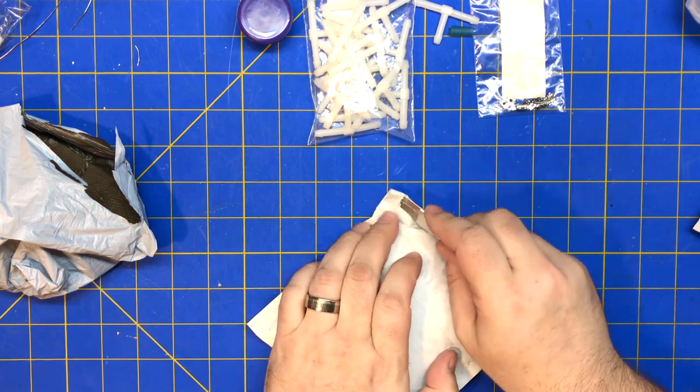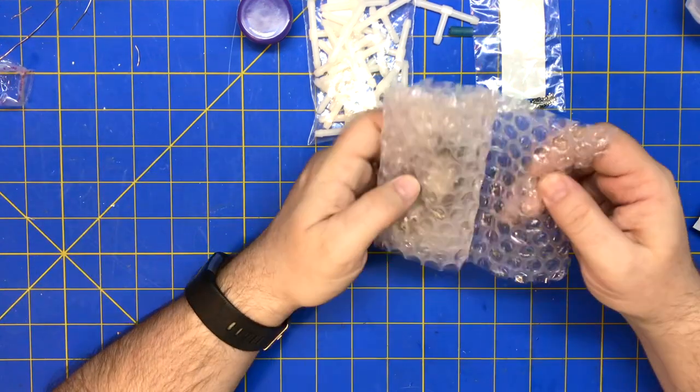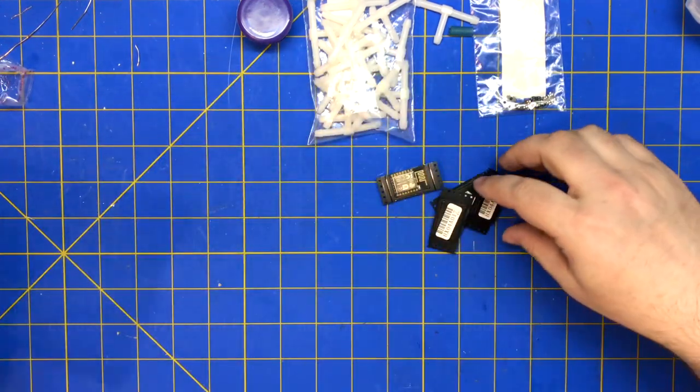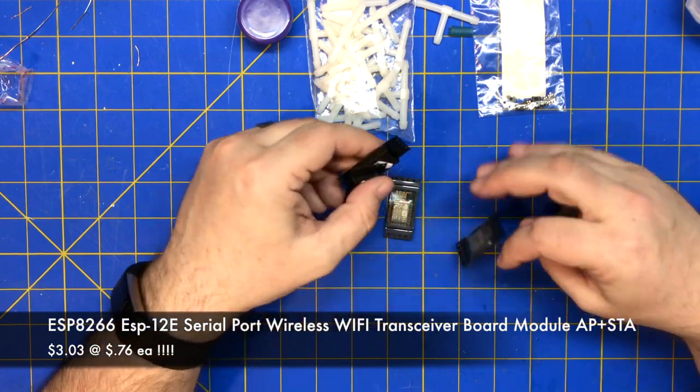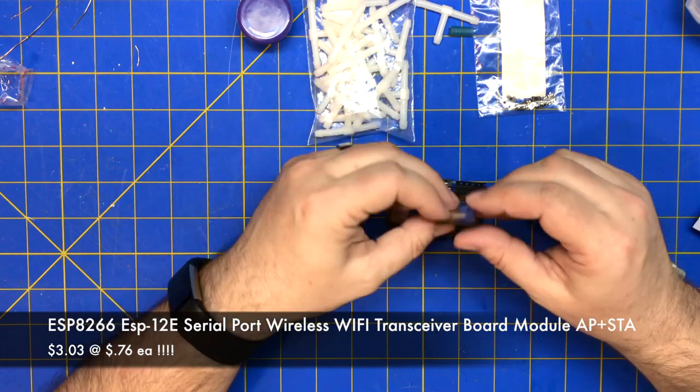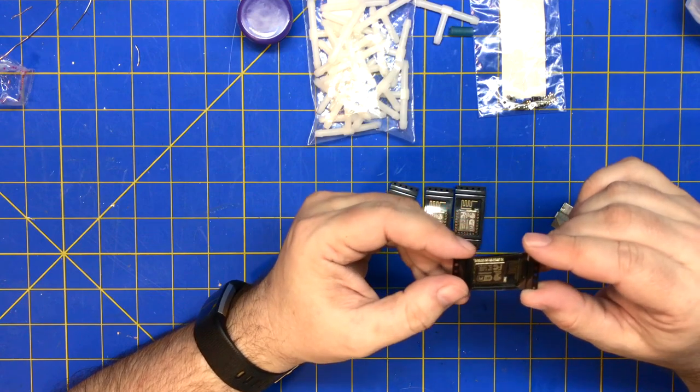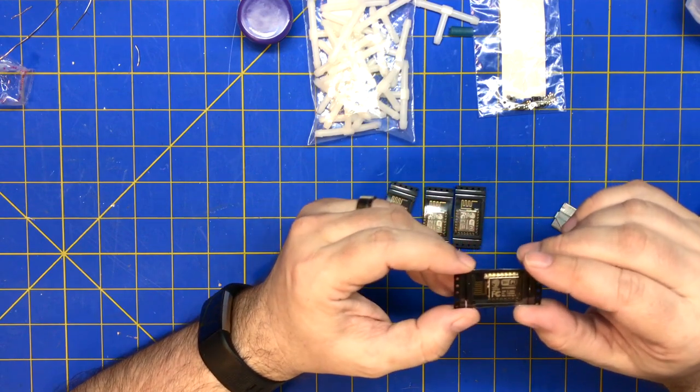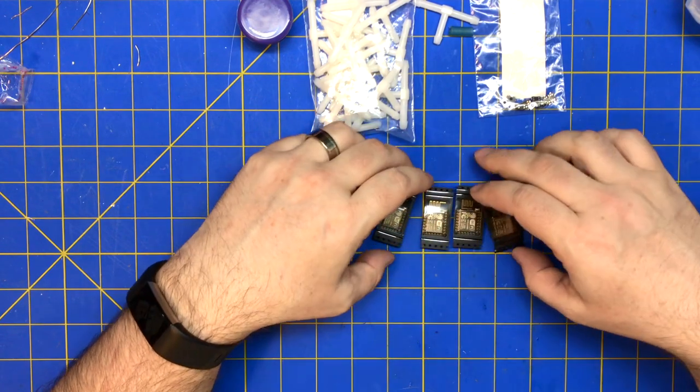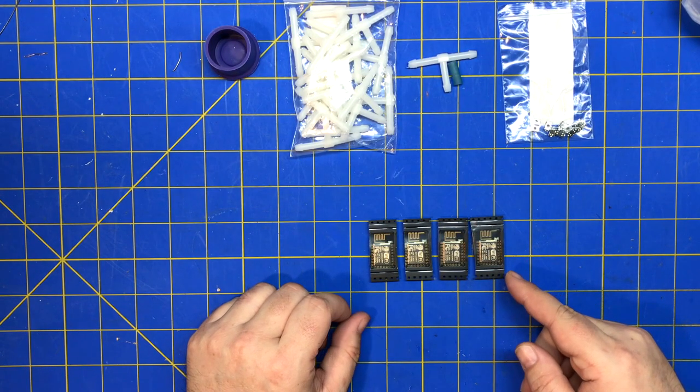Next, modules. These are four ESP-12 E's. I mean, yeah, E's. I think these are E's. Yeah, I got the old antenna. These are the ones that say mod.